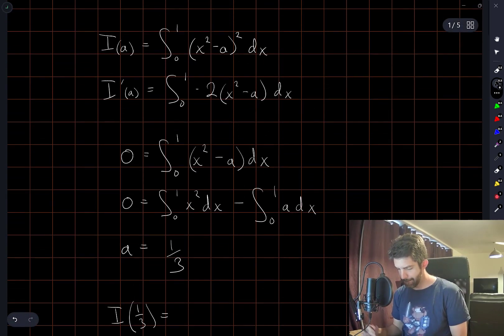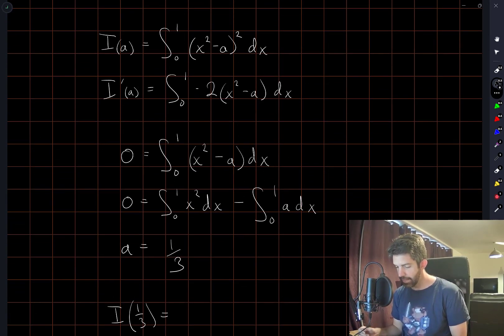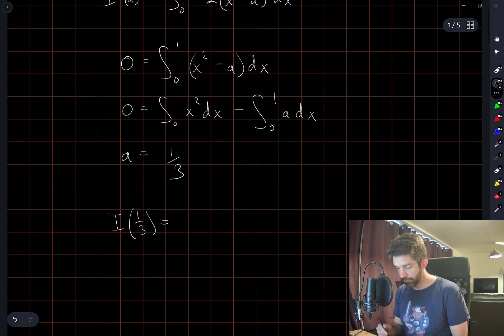I don't see any quick and easy way of computing this without just substituting a equals 1/3 back into the original expression for I(a). So that's what I'm going to do.